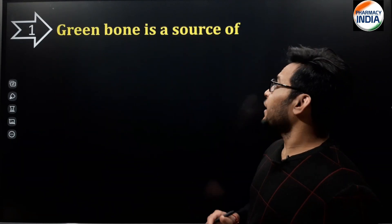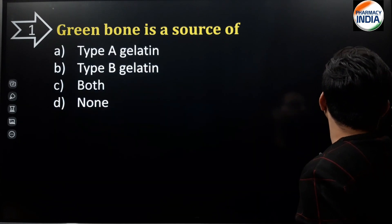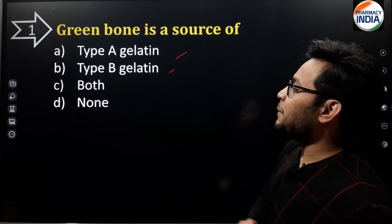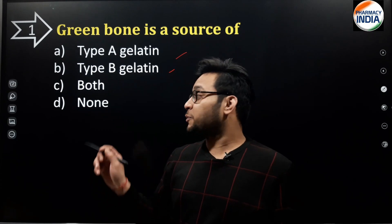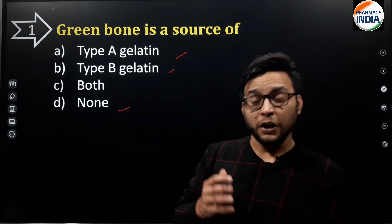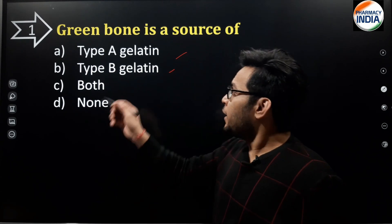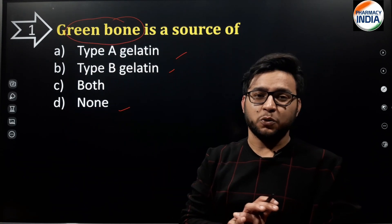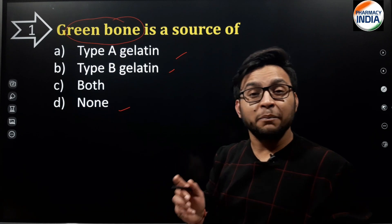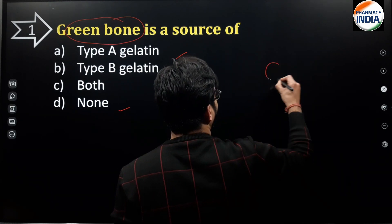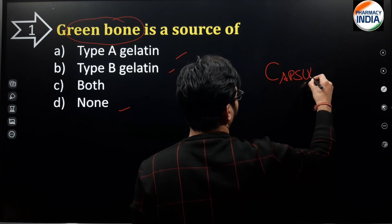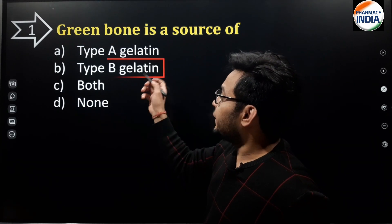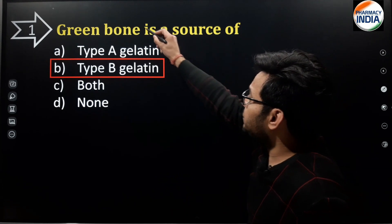First question: green bone is a source of — and the options are: option A is Type A gelatin, option B is Type B gelatin, option C is both, or option D is none of the above. The question asks which type of gelatin green bone is a source of. Gelatin is mainly used in capsules. The correct answer is Type B gelatin.